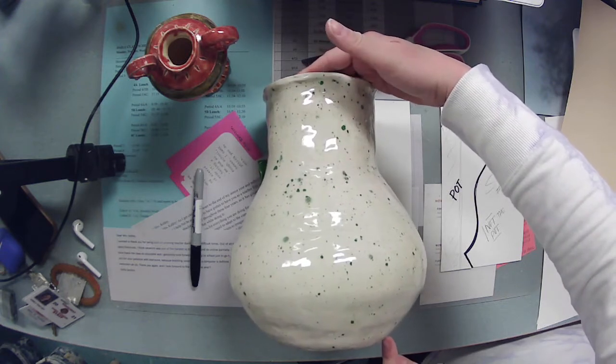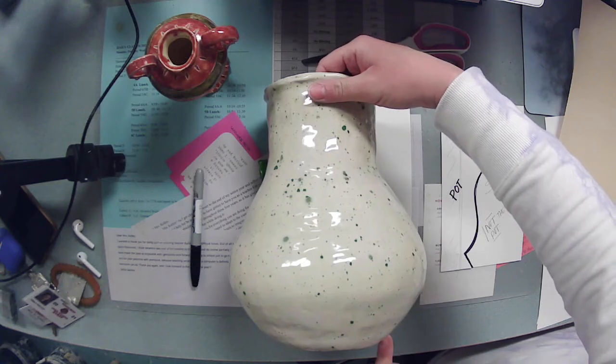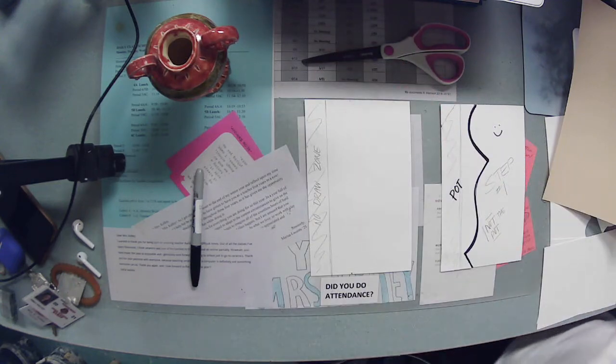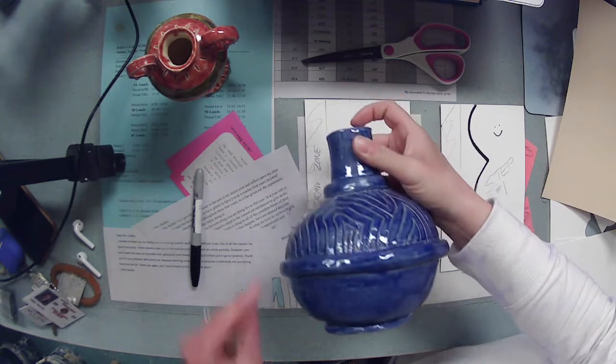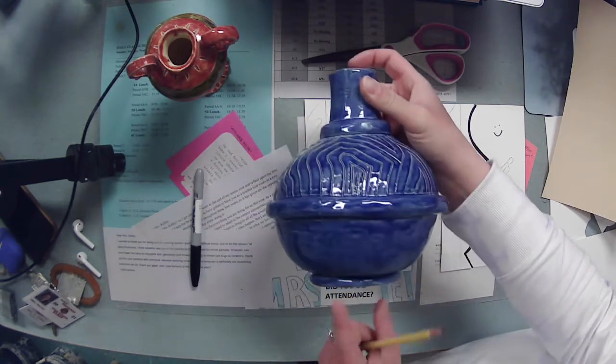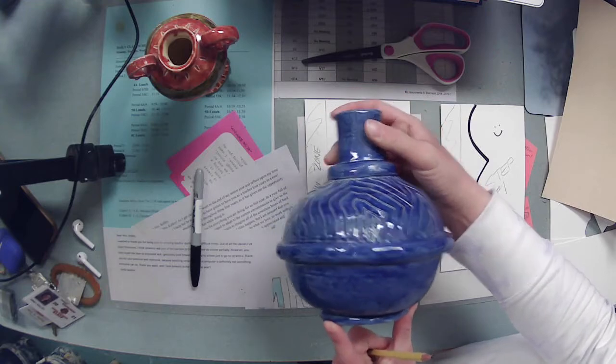The lip's gonna be and then I'm marking where how wide the bottom is gonna be. So in this case they're basically one is right directly over top of the other on my tracer. But for this one I have a much narrower lip or opening than I do a base.